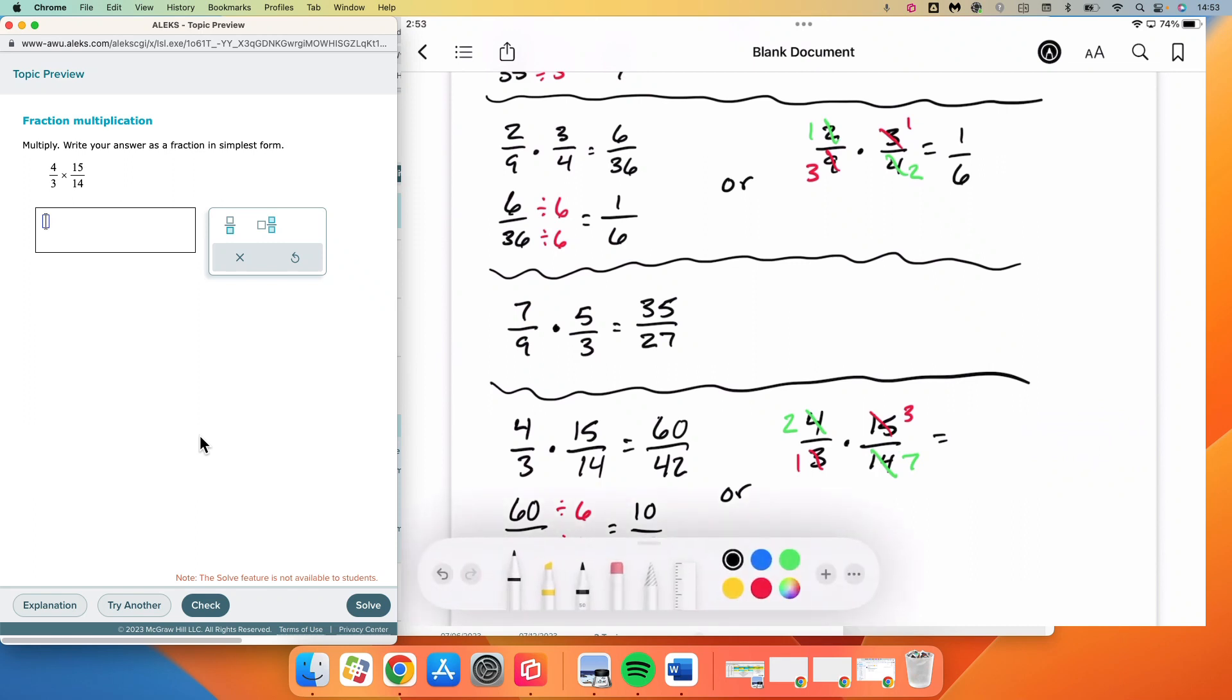I'm sorry, that should be a 5, not a 3. 15 divided by 3 is 5, not 3. So 2 times 5 is 10, 1 times 7 is 7.